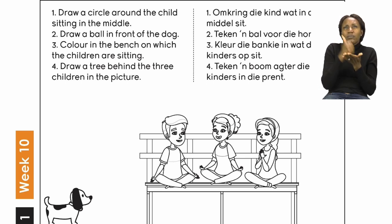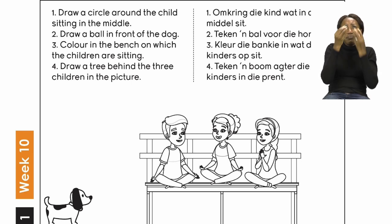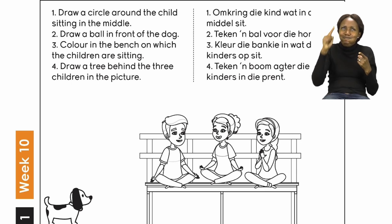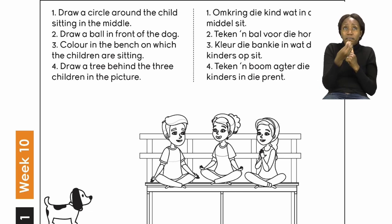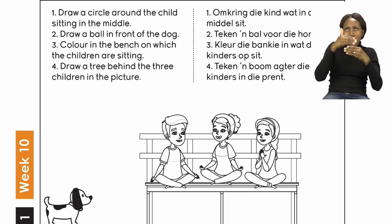Now we need to follow these instructions clearly. If you are not sure what to do after we read the instructions, please ask an adult to read for you. The first thing you are going to do, boys and girls, is draw a circle around the child sitting in the middle. You can see that we have three children — one, two, three — and we need to draw a circle around the one in the middle.